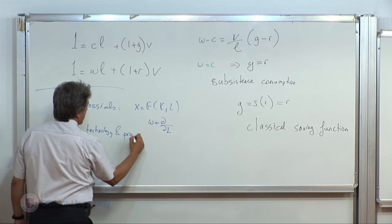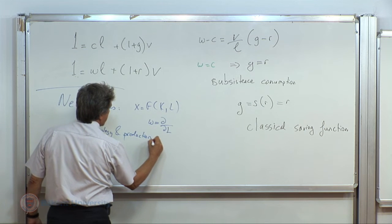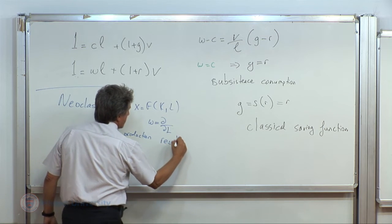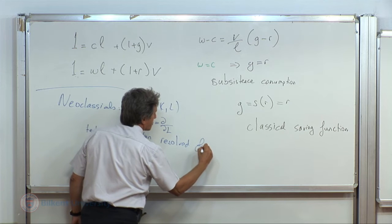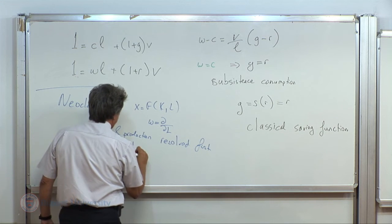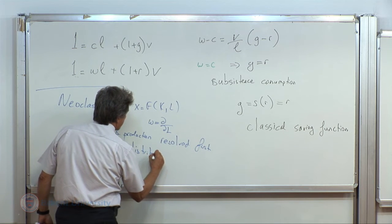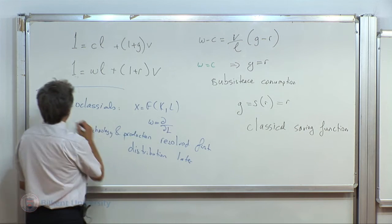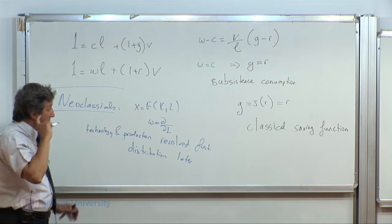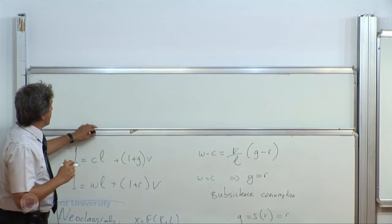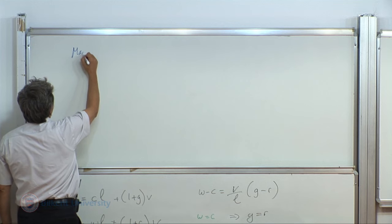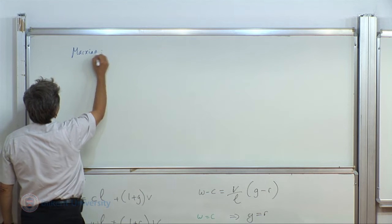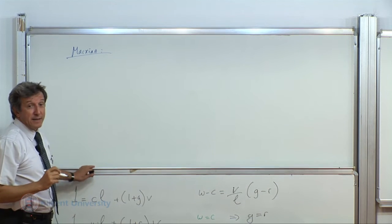And neoclassicals will simply say that this output corn that I have denoted X is being produced by capital and labor along the production function. And they have said that wage rate is the derivative of this function with respect to L. And the way it happens is that first output is produced, then factors are paid their wages and profits. Technology and production is resolved first, distribution of that output is found out later. That's the sequence of events.